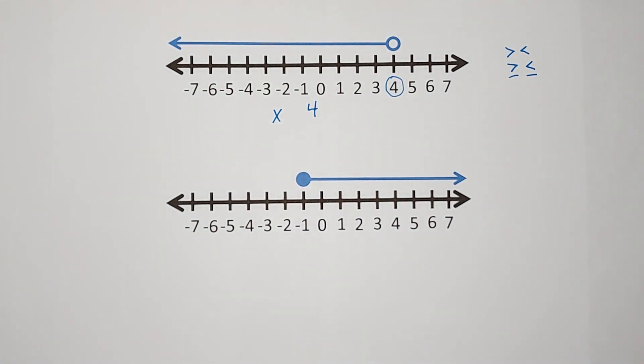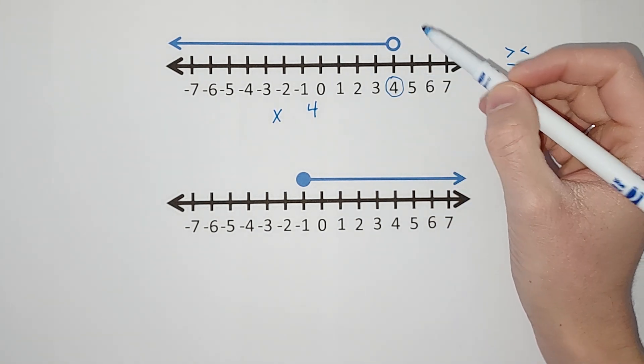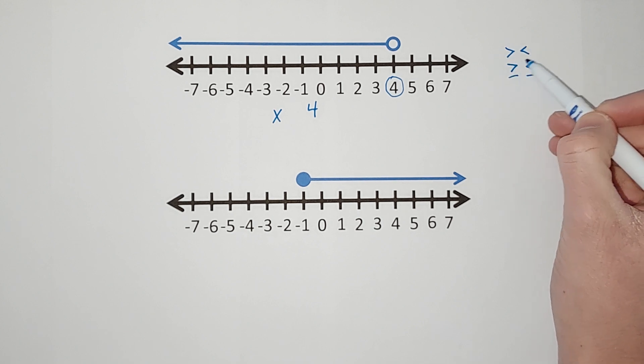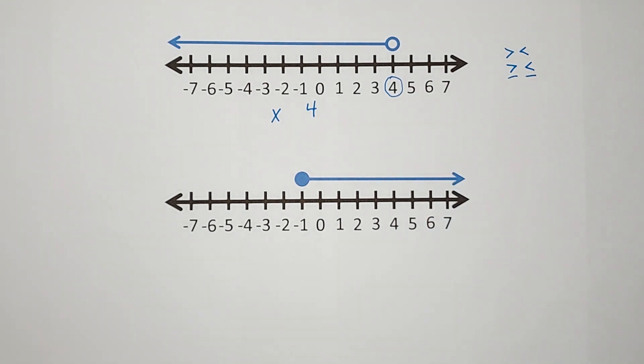What tells me which one it is is if it's open or closed and which way the arrow is going. Since it is an open circle, I know it is one of the top two. It is either greater than or less than. We don't have the equal to. So now we just need to figure out which one it is.